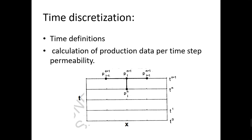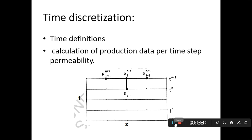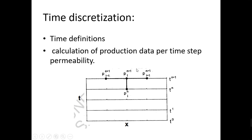Now we talk about time discretization. For example, production rate today is 1000 barrels per day, but after two days it may be 900 or 1100. The reservoir situation is always changing — the reservoir is alive. So we have to account for changes based on time as well. We divide the production into discrete time steps, and we discretize based on t, which represents the time step.